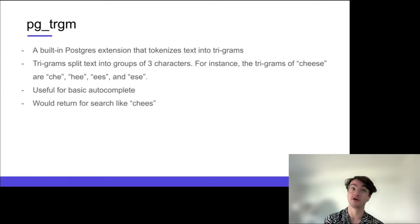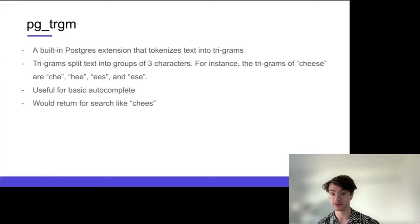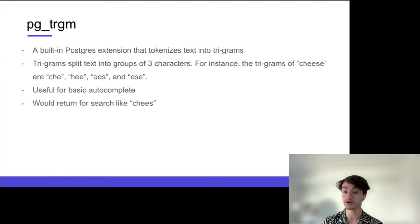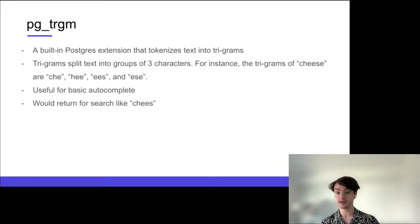Lastly, pg_trgm is an extension built into core Postgres that splits words into groups of three characters — trigrams. For the word 'cheese,' the trigrams would be 'che,' 'hee,' 'ees,' 'ese.' It can be used for basic autocomplete — if a user is missing certain letters in a search term, pg_trgm helps retrieve the right information. It's pretty limited but can get you part of the way.